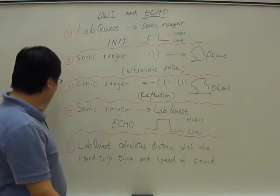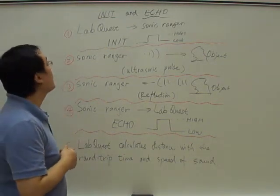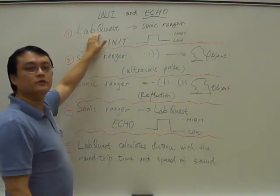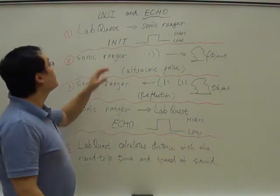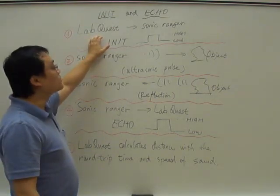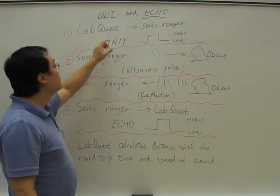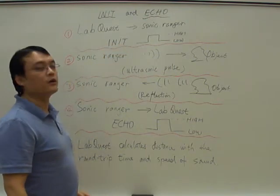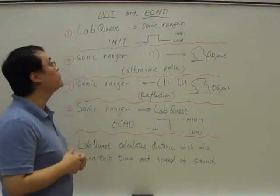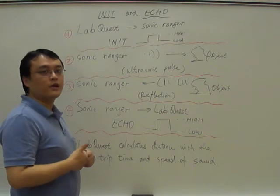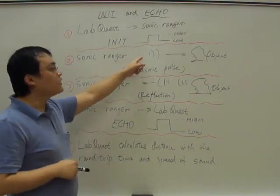There's this five-step procedure how LabQuest actually obtains distance from Sonic Ranger. In step one, LabQuest actually initiates the magnet by pulling the INIT line to high and then later low. Once the Sonic Ranger detects that, it sends out an ultrasonic wave.